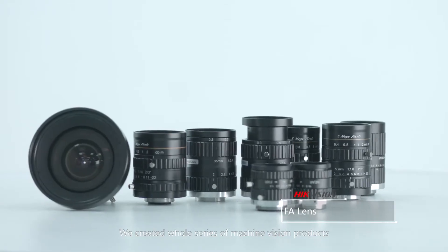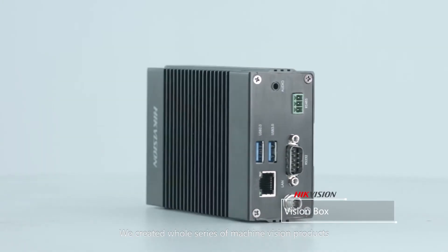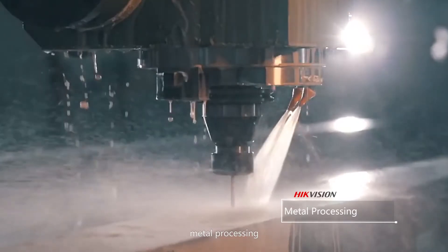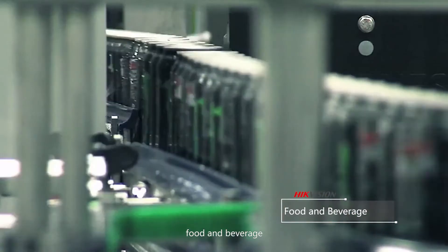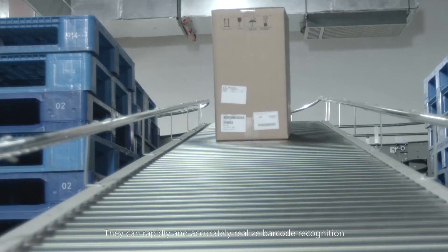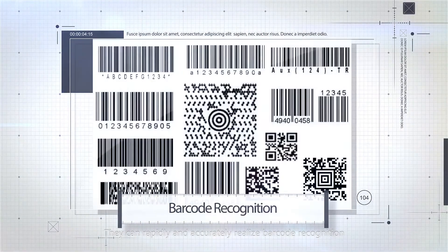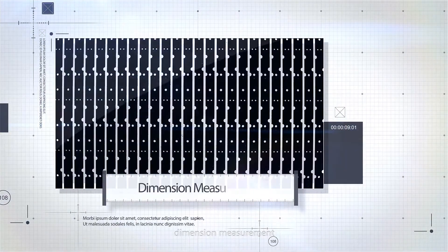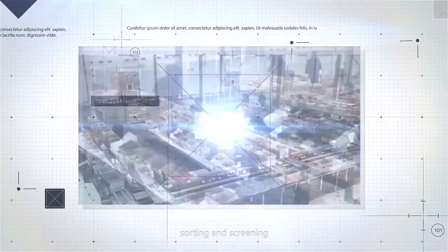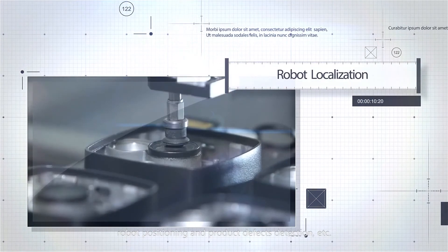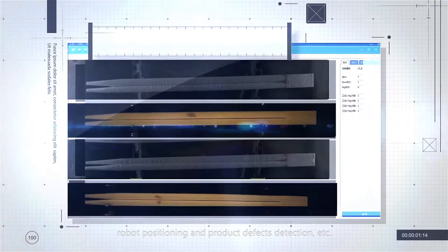We created a whole series of machine vision products widely applied in 3C, metal processing, food and beverage, and logistics. They can rapidly and accurately realize barcode recognition, dimension measurement, sorting and screening, robot positioning, and product defects detection.